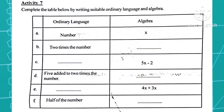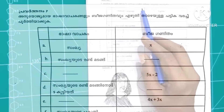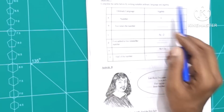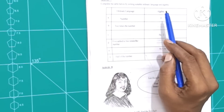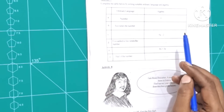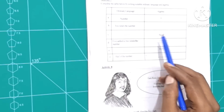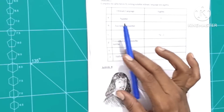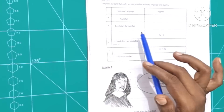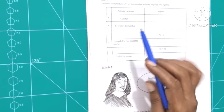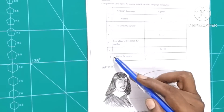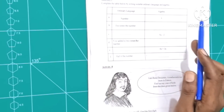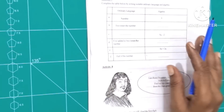Complete the table below by writing suitable ordinary language and algebra. That means, in other words, it is presented in the form A, B, C, D, E, F, N.